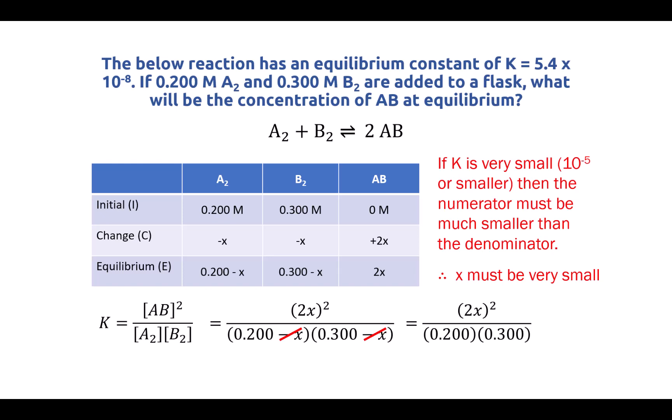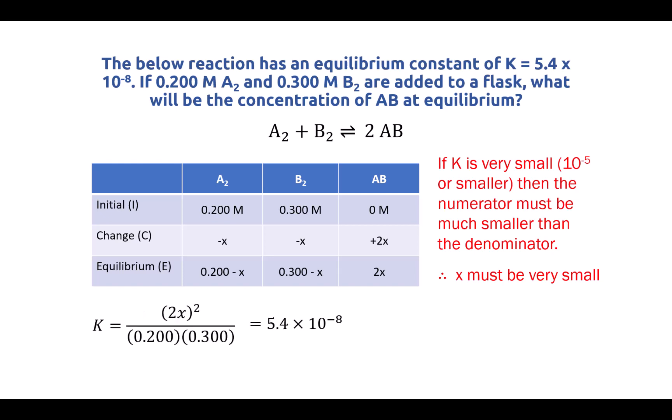So this is a much, much easier question to solve at this point because we no longer have multiple x terms. We just have that 2x all squared in the numerator. So what we'll do next is we're going to remember that this is all equal to that k value of 5.4 times 10 to the minus 8. Now we can solve this using algebra. We can rearrange the equation to look like this. 2x all squared is equal to 5.4 times 10 to the minus 8 times 0.2 times 0.3. So I've just done a cross multiplication there to isolate the x term and bring the other terms to the other side of the equation. Now in order to get rid of the squared term, I'm going to take the square root of both sides like this. And that is going to eliminate the squared term on the left, and we can get an actual value for those terms on the right.